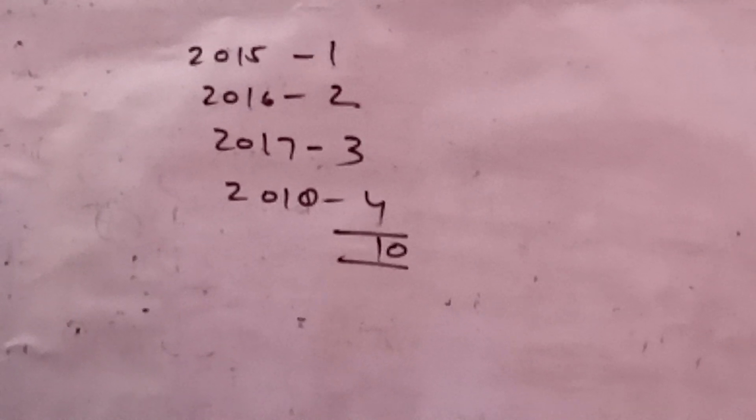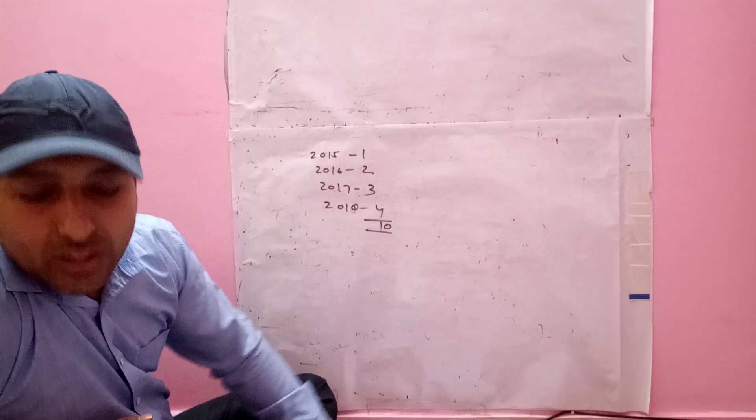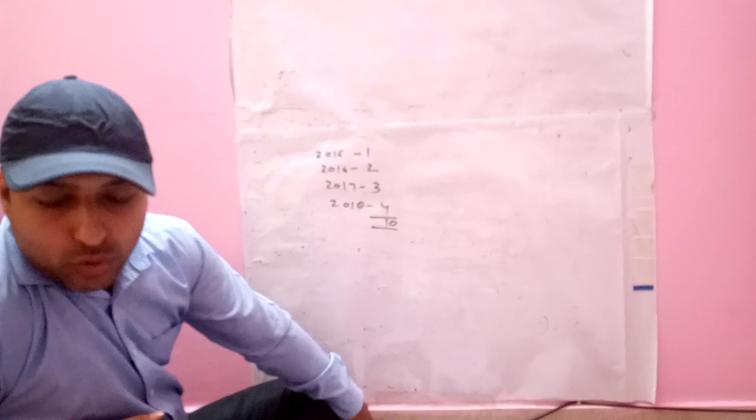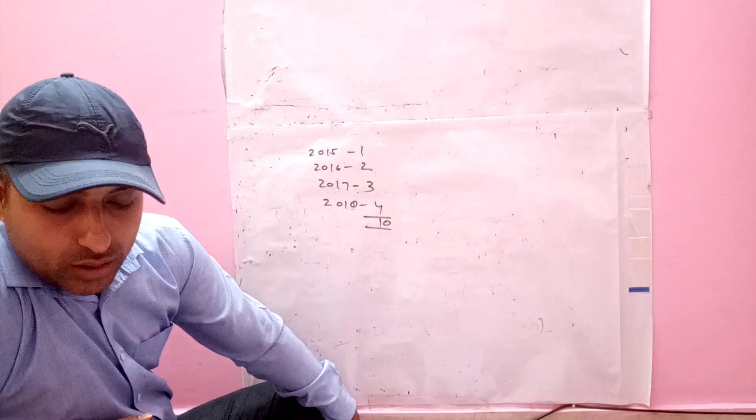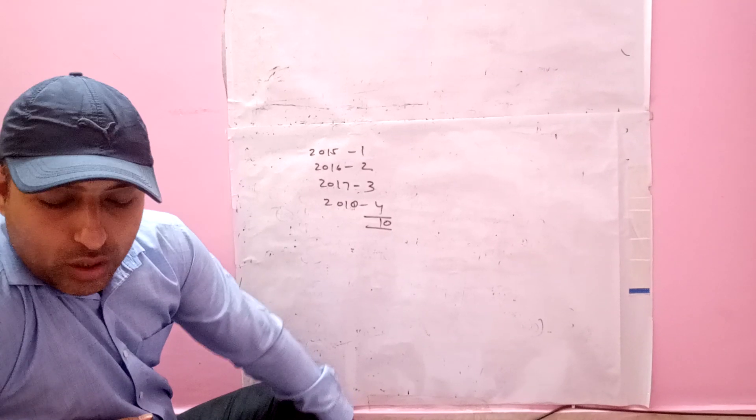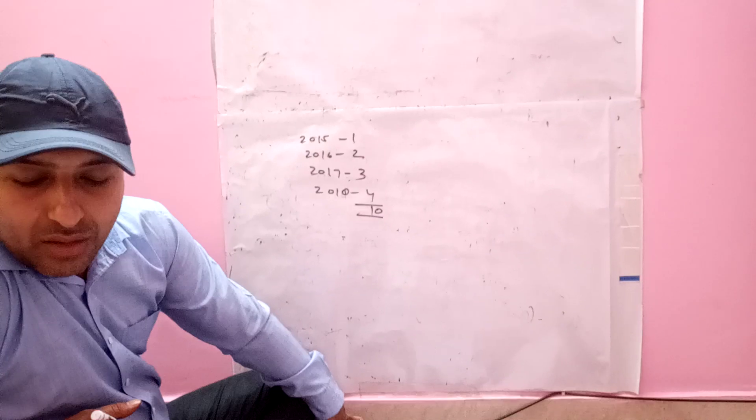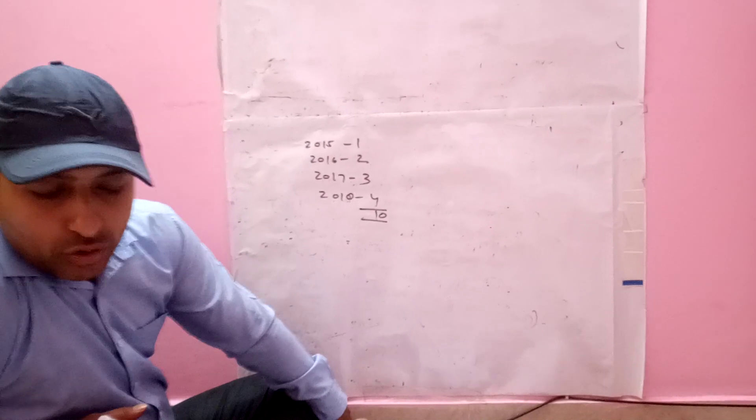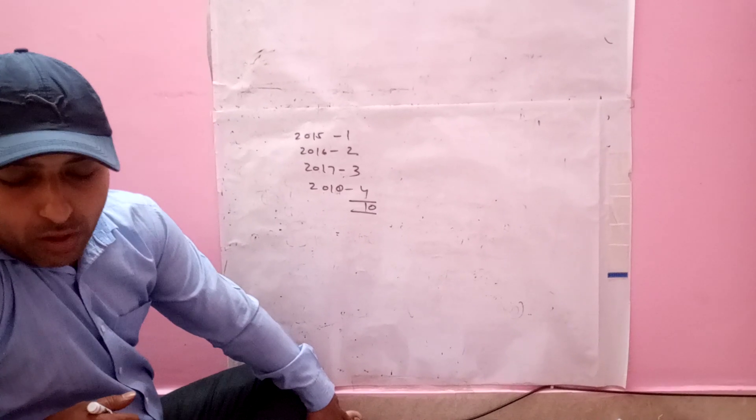Thereafter, each year's profit is multiplied by the weight assigned to it in order to find out the products. The total products is then divided by the total of weights in order to calculate the weighted average profit.